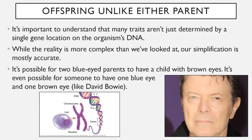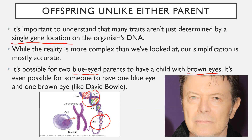Now, offspring can be unlike either parent — and this is where it gets a lot more complicated. It's important to understand that many traits aren't just determined by a single gene location in the organism's DNA. In your full strand of DNA, only one small segment forms an actual gene. Just because your parents have blue eyes, it's not necessarily 100% certain you'll have blue eyes — it is actually possible for two blue-eyed parents to have a child with brown eyes, because the gene for eye color is not located in just one part of your DNA strand; it can be found in several parts.